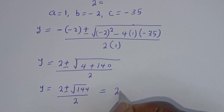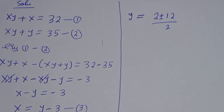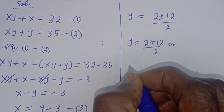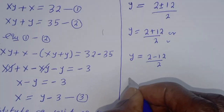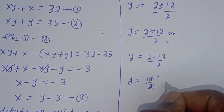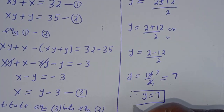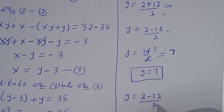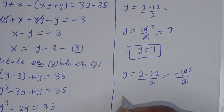This simplifies to y equals 2 plus or minus the square root of 4 plus 140, which is 144, all over 2. The square root of 144 is 12, so y equals (2 plus 12) over 2 equals 14 over 2 equals 7, or y equals (2 minus 12) over 2 equals negative 10 over 2 equals negative 5.